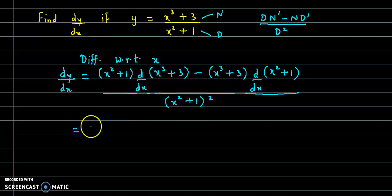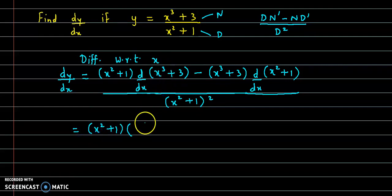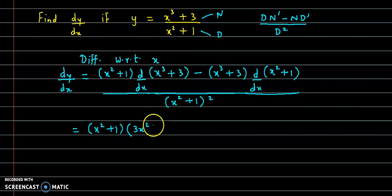Next step: x square plus 1 into derivative of x cube is 3x square. The derivative of the constant 3 is 0.